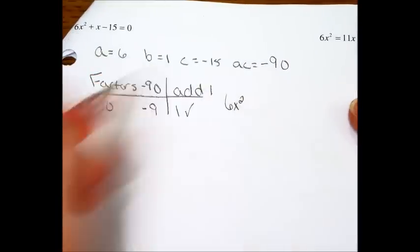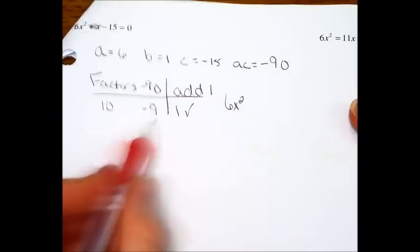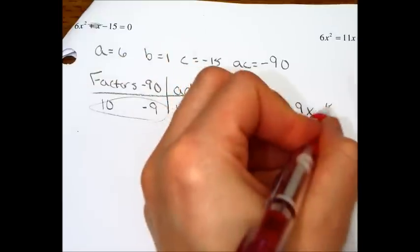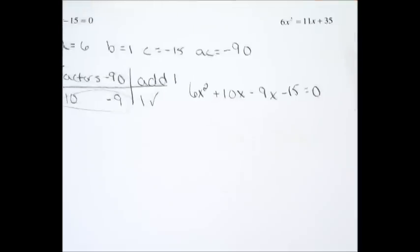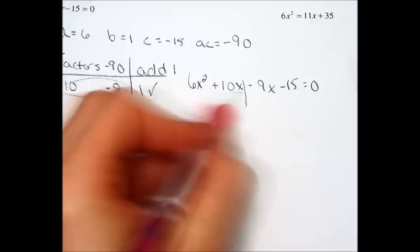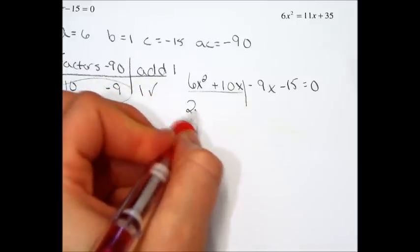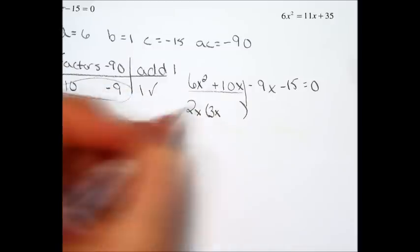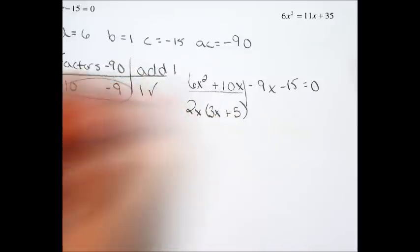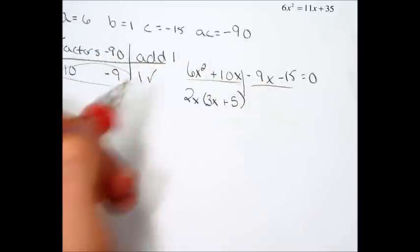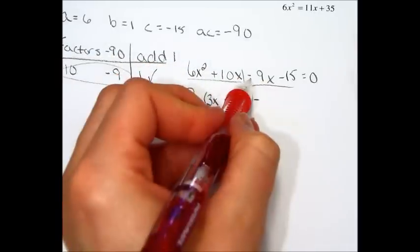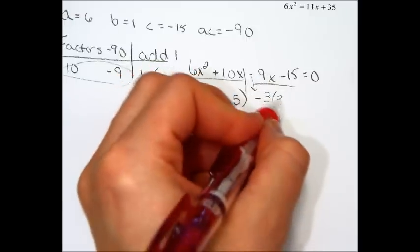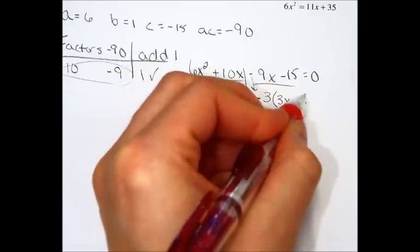Now it's time to rewrite. Keep the 6x squared. Do not keep the plus x, but instead write plus 10x minus 9x. That came from the circle. And minus 15 equals 0. Look at the first two. You should notice that you can pull out a 2 and an x. 6 divided by 2 is 3, and that one will have 1x left over. 10 divided by 2 is a positive 5, with no x's left over. The second two, you're going to factor out a negative because of this sign, and it's going to be a 3. Divide by negative 3, you get 3x. Divide by negative 3, you get positive 5.